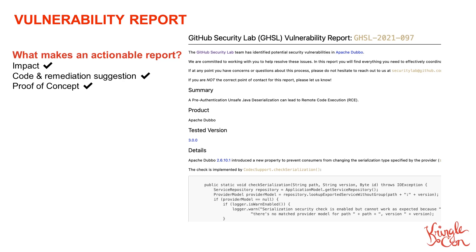Want extra brownie points? Inform maintainers that you're willing to help review their fix. Ask them to create a private patch environment so that you can discreetly work together until it's ready to be publicly disclosed. You'll be surprised how many maintainers don't know they can even do that — ask for it and even show them if they don't know about it. Writing an effective report helps both maintainers and reporters agree on how bad the bug is, and helps them decide how high a particular fix should be on the project's long list of competing priorities.